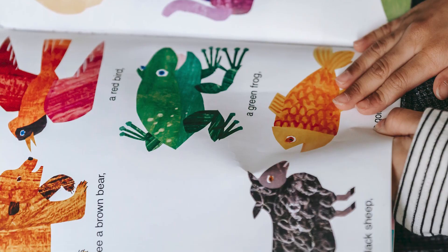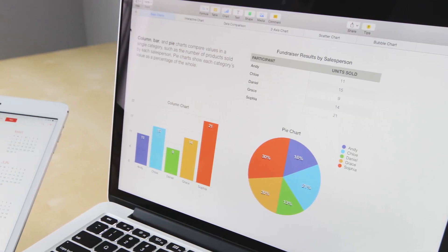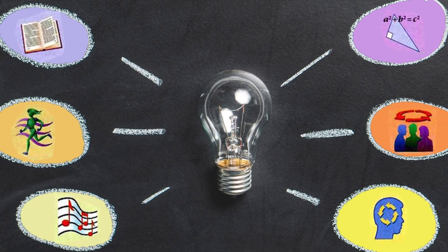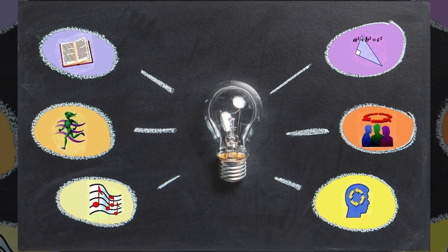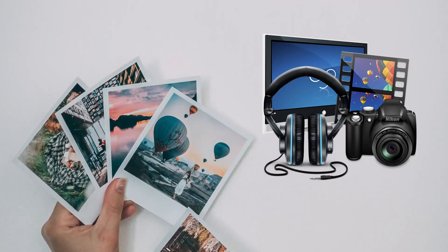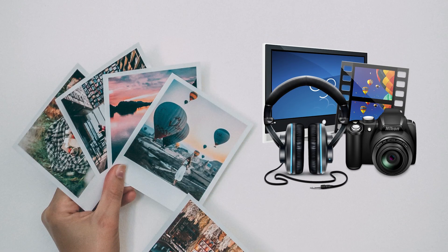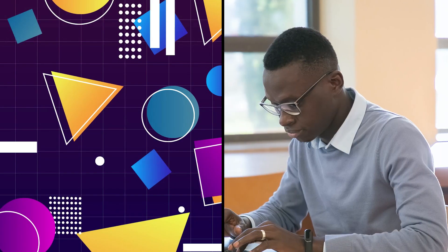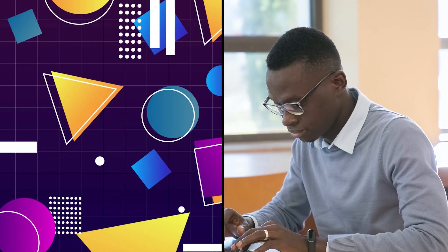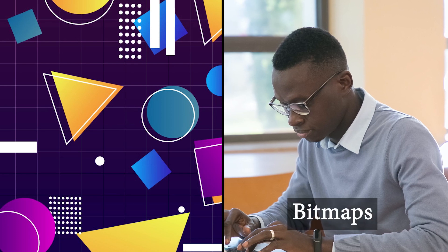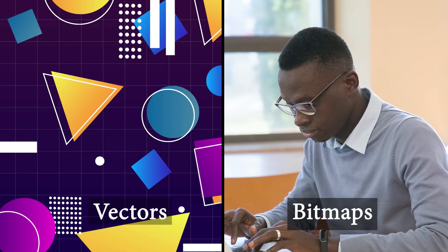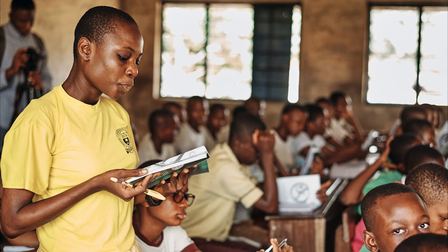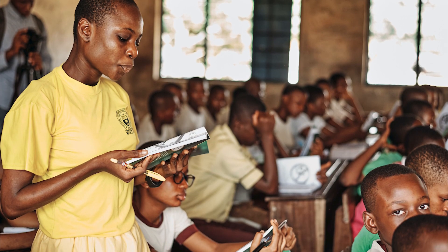Graphics make the multimedia application attractive and help to illustrate ideas through still pictures. There are two types of graphics: bitmaps, also called paint graphics, and vectors, also called draw graphics.